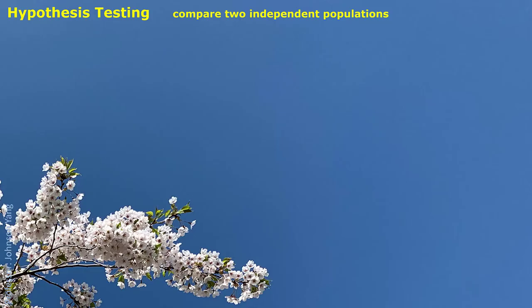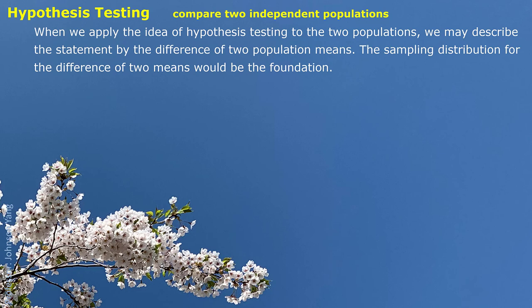Hello everyone. Here we continue talking about hypothesis testing. We have learned the idea of hypothesis testing, and we know now the null hypothesis and alternative hypothesis. When we apply this idea of hypothesis testing to two populations, we may describe the statement by the difference of two population means.